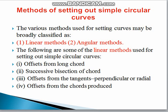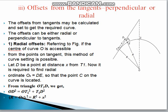The simple circular curve methods include offset from the long chord and successive bisection of the chord. In this lecture we learn the offset from the tangent — perpendiculars, also called radials — and then offset from the chord produced. So we cover offset from the tangents, perpendiculars, or radials.